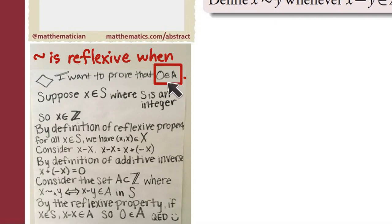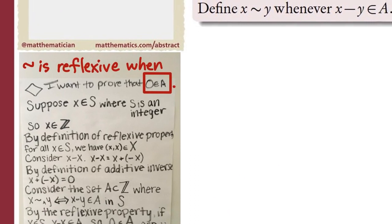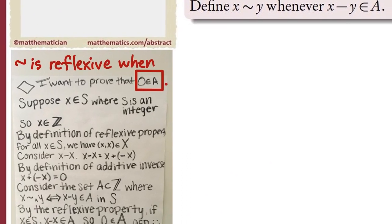Why 0? Because in order to have x be related to itself for all values of x inside of the integers, in order to have everything related to itself, given that the relation is defined by the quality that two things are related when their difference is an element of A, in order for x to be related to itself, that means that the difference between x and x must be an element of A. But the difference between x and x is exactly what we mean by 0.